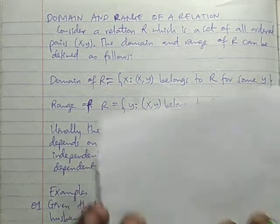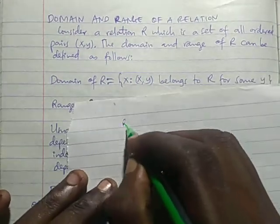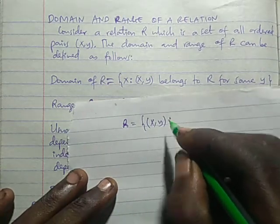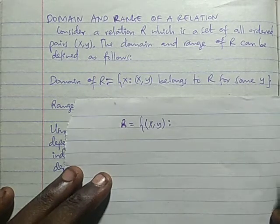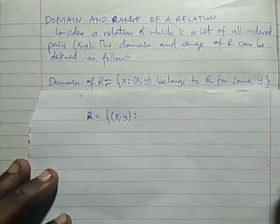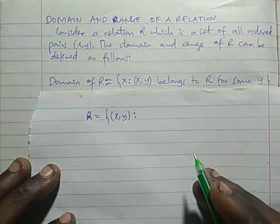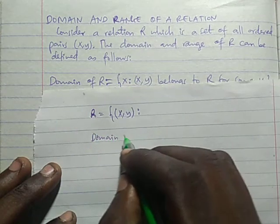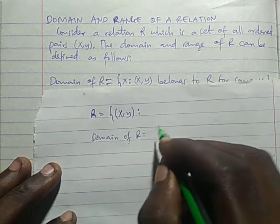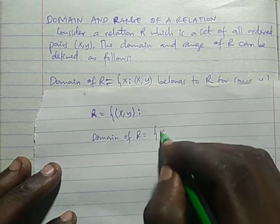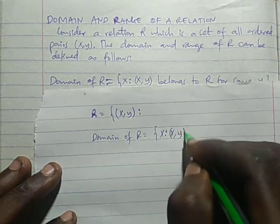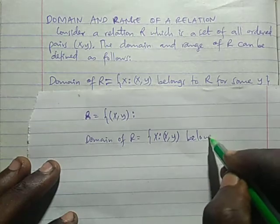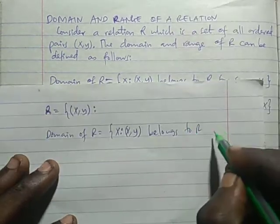For any relation R, which is equal to a set of ordered pairs (X, Y), domain of R is a set of ordered pairs X, whereby for each value of X, there exists some Y such that the pair belongs to R.